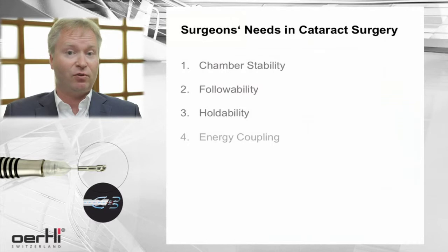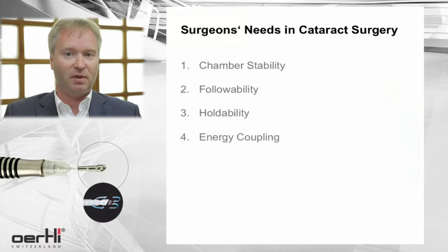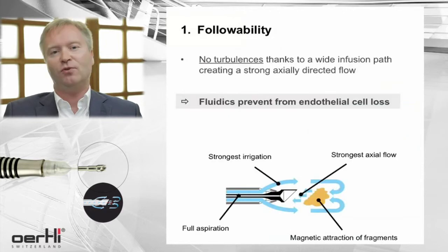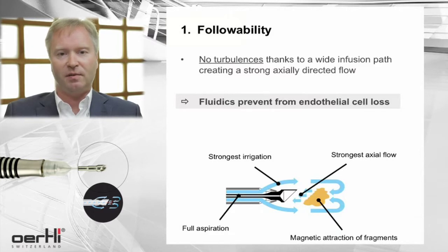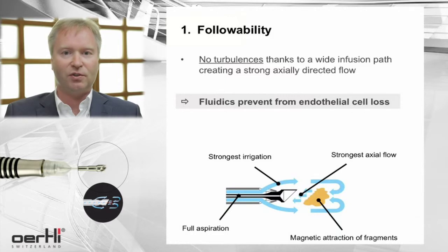You should have a good energy coupling between the nuclear fragments and the Faco tip. Followability is so important because you don't want to have turbulence in the eye and in the anterior chamber. This is especially important as you want to save the corneal endothelium from being damaged during surgery.